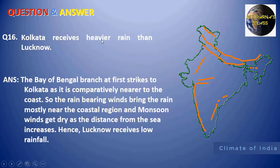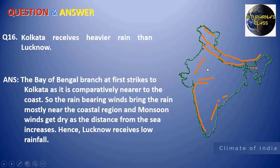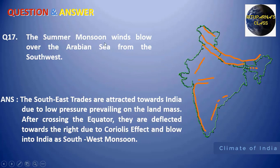Next: Kolkata receives heavier rain than Lucknow. Kolkata is nearer to the coast. When the wind from the Bay of Bengal branch strikes the eastern coastal plain of India, it first reaches Kolkata and then Lucknow. By the time the monsoon winds reach Lucknow, they get dry. That's why Lucknow receives lower rainfall than Kolkata.